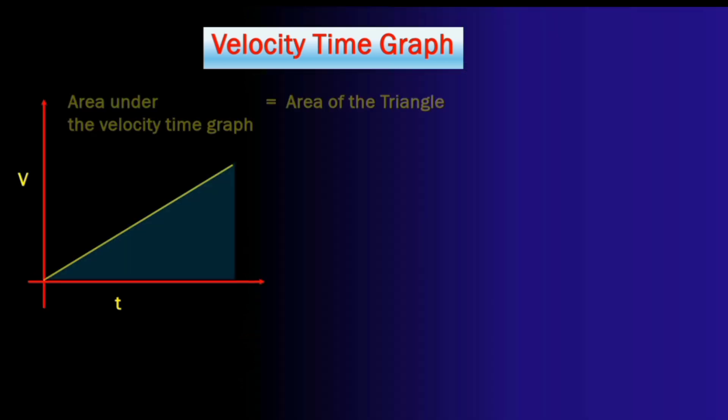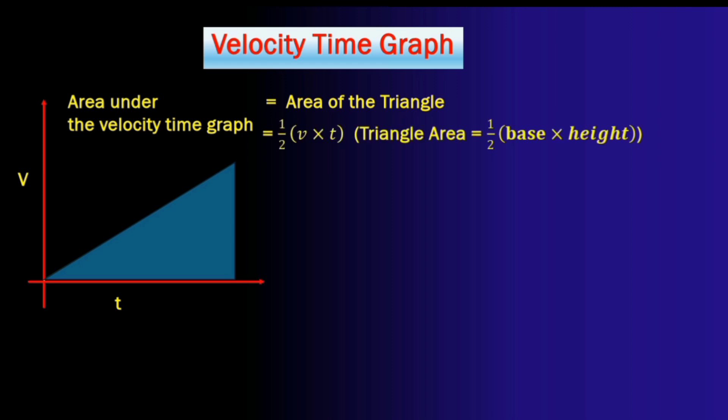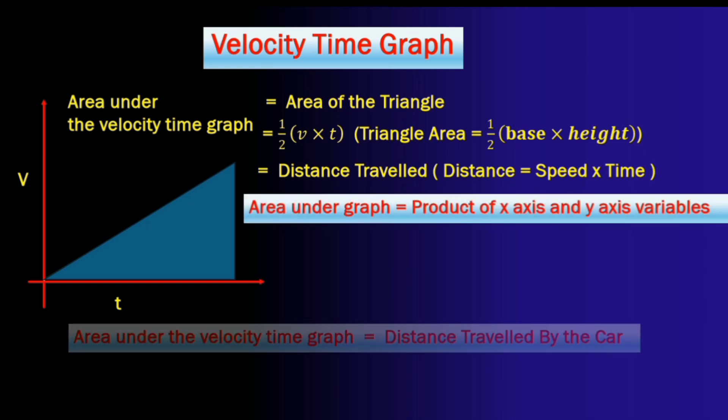It will be a triangle. And what is the area of a triangle? We all know that it's half base into height. The base here is the time and the height here is the velocity. And what is velocity into time? Yes, it's the distance.